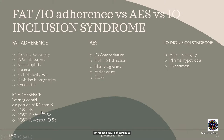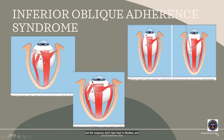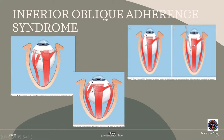Post-scleral buckling can include the inferior oblique muscle in the buckle, causing tethering with stretching of the neurovascular bundle and restriction of elevation in adduction. Scarring of the inferior oblique after inferior oblique surgery or inflammation also causes inferior oblique adherence syndrome. After inferior oblique weakening procedures, accidentally hooking the inferior rectus can cause inferior oblique adherence. It is better to hook the inferior rectus from the nasal aspect rather than the temporal aspect when doing inferior rectus surgery after inferior oblique surgery.